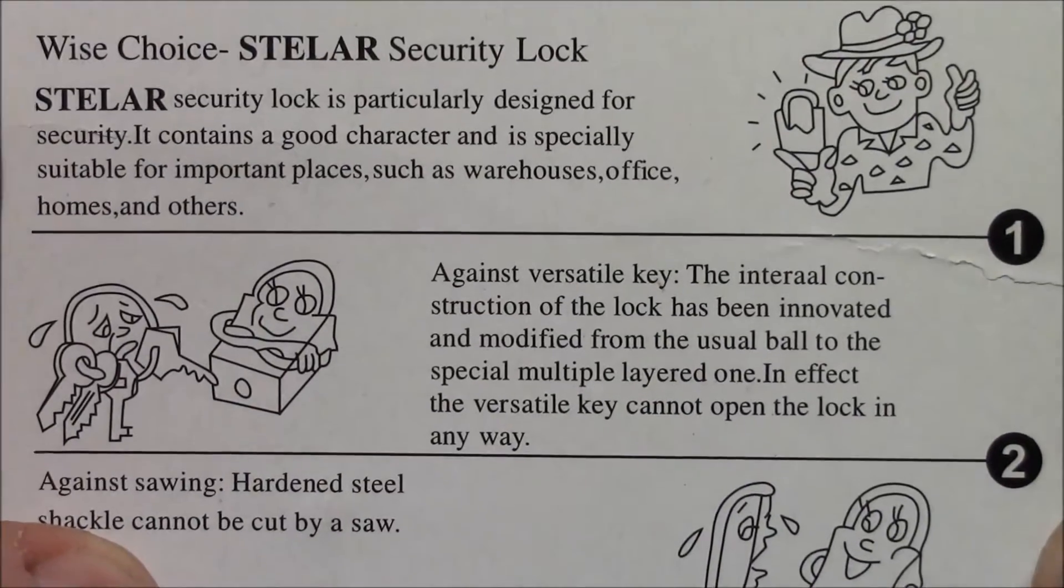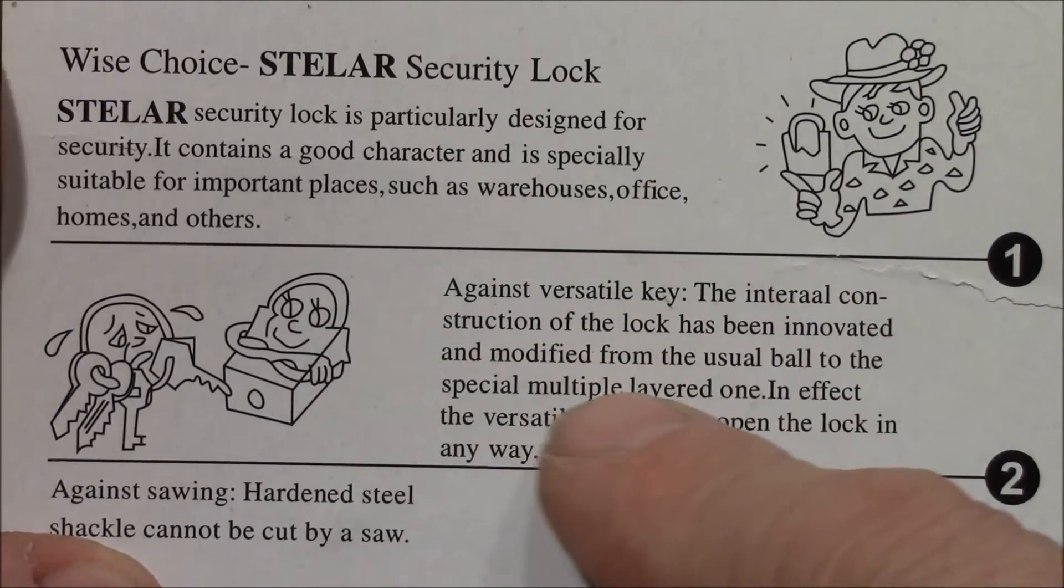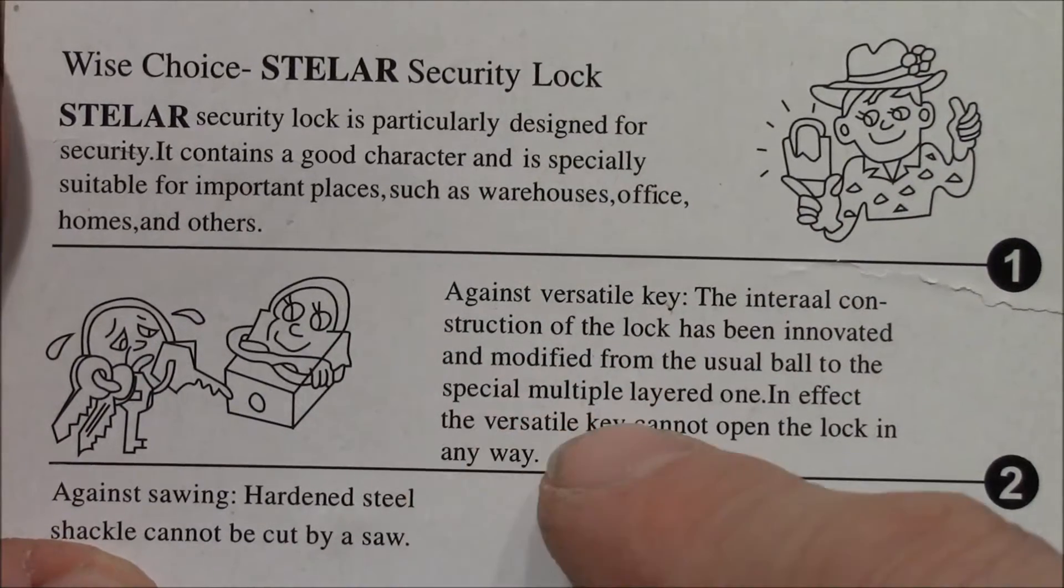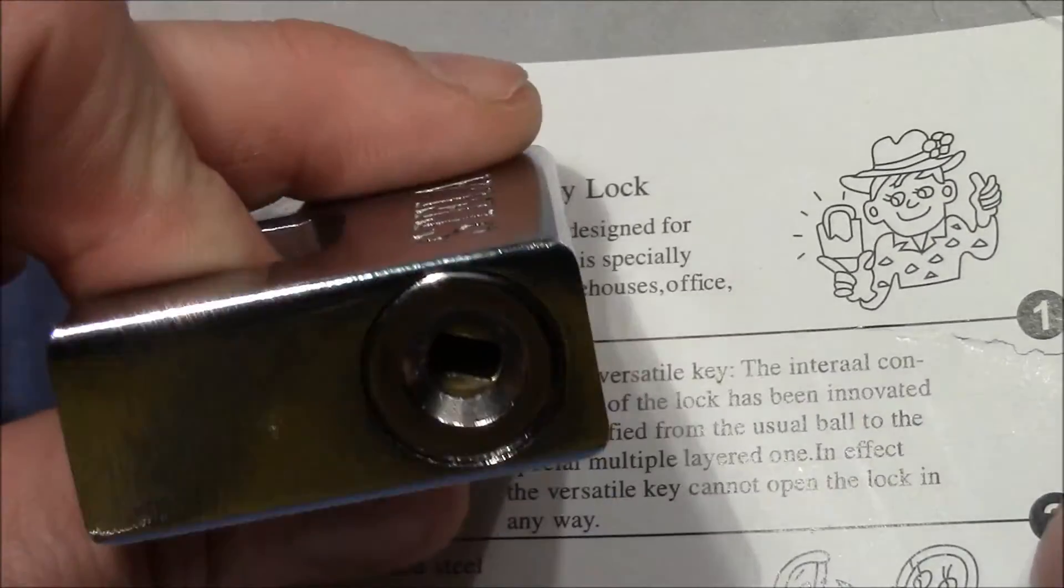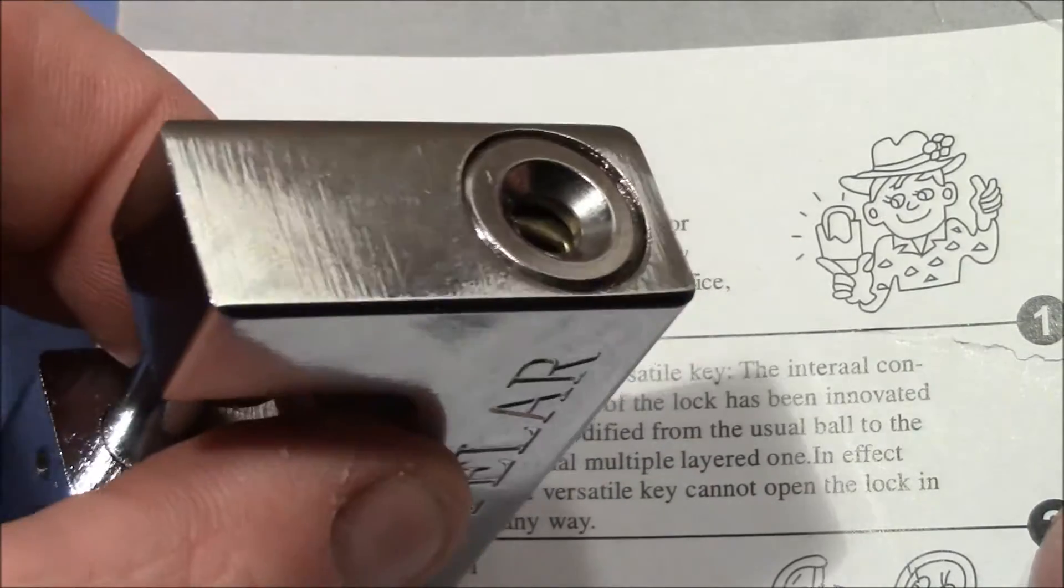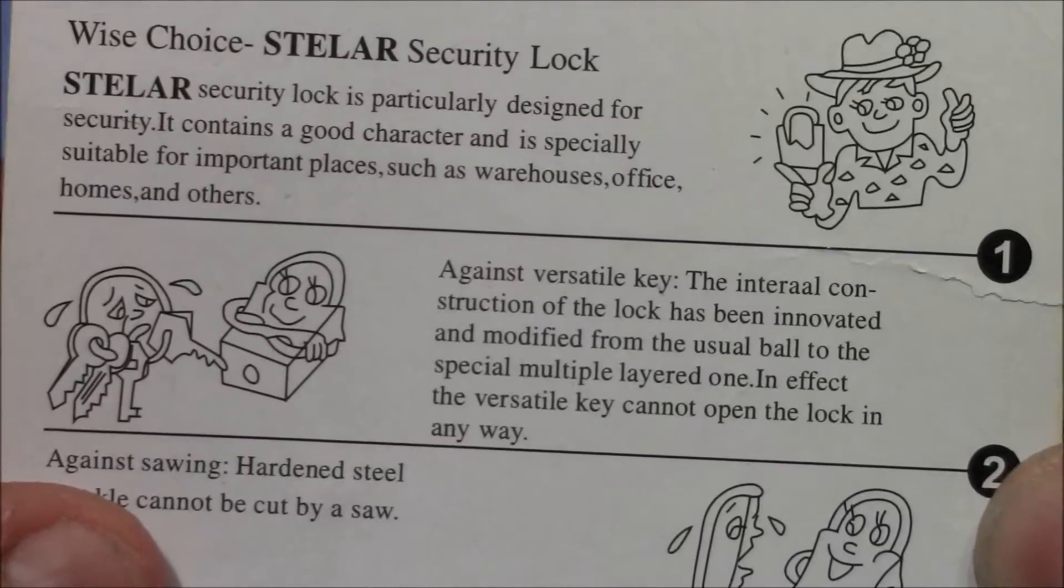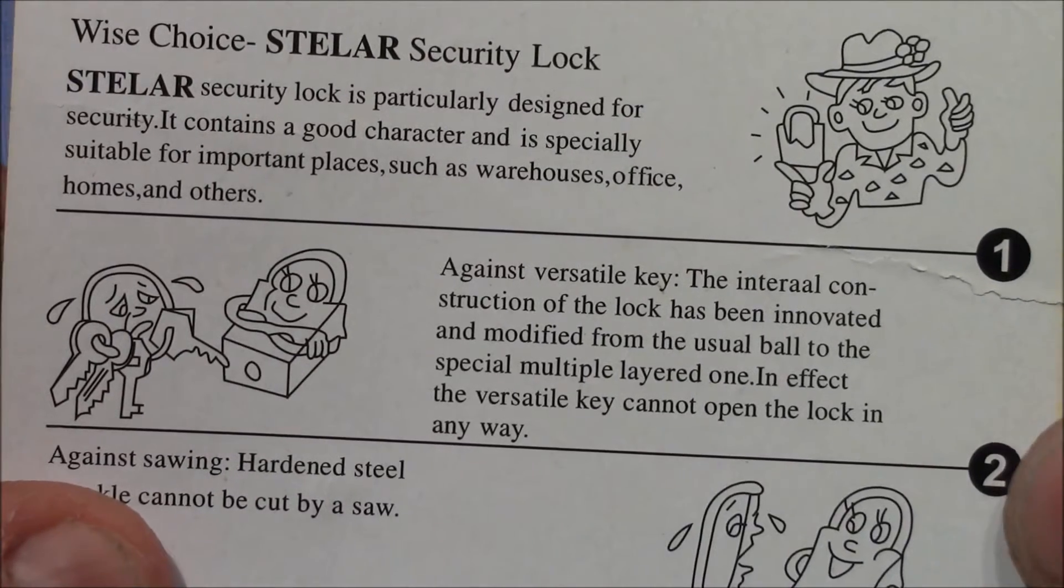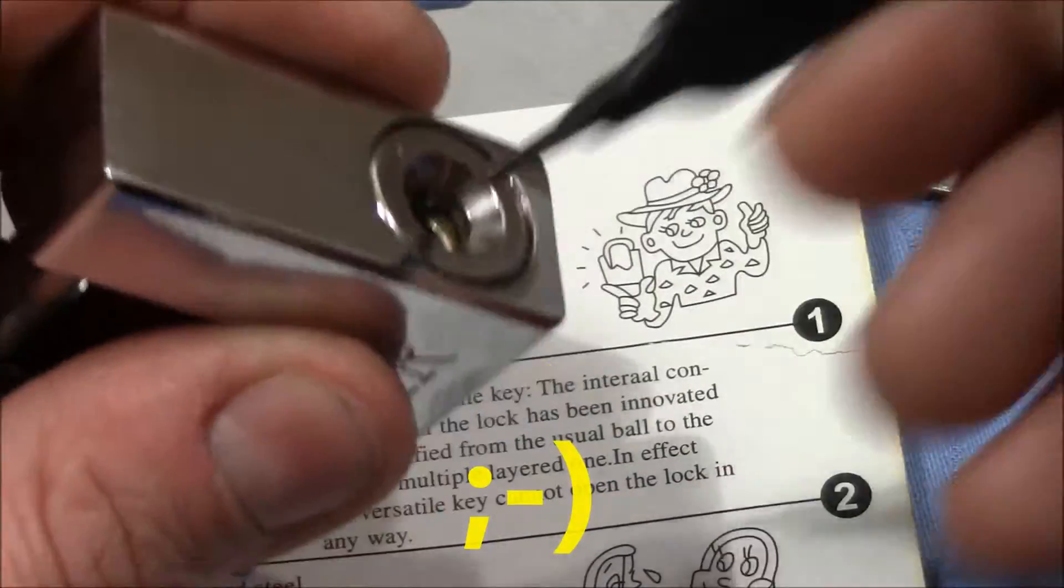Against the versatile key: The internal construction of the lock has been innovated and modified from the usual ball to the special multi-layered one. Multi-layered I believe means the discs are stacked in layers. In effect, the versatile key cannot open the lock in any way. I've tried that with a rake and they are right, it doesn't open.